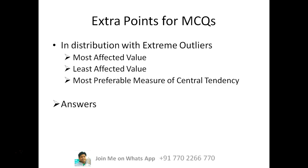Suppose when you are doing research, you are collecting the source data and then you find that some values are extreme. So what is the most affected central tendency, what is the least affected central tendency, and what is the most preferable measure of central tendency in such cases?